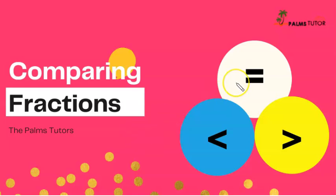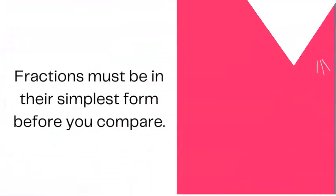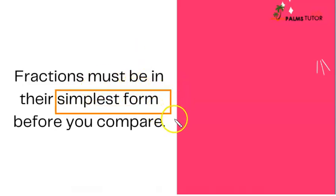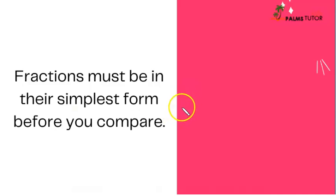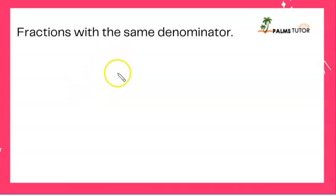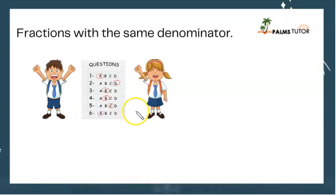If fractions are not equivalent, then one must be greater or lesser. Welcome to lesson 8 on comparing fractions, where we determine whether fractions are equal, bigger, or smaller, and arrange them in a particular order. Before we do anything, fractions must be in their simplest form before you compare — there has to be a basis for comparison. Once in simplest form, we can decide whether they are equal, greater, or lesser.